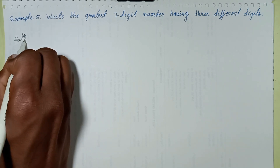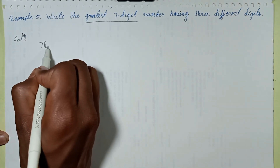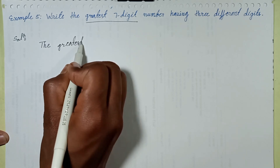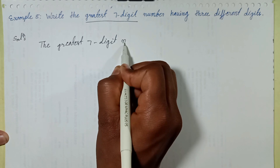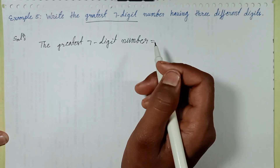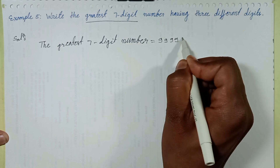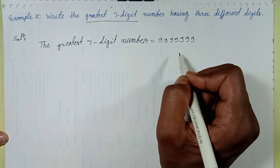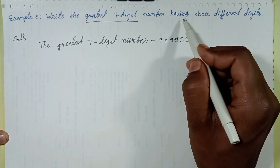First of all, write the greatest seven digit number. The greatest seven digit number is nine written seven times: 9,9,9,9,9,9,9. This is the greatest seven digit number. Now we need it to have three different digits.